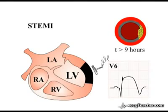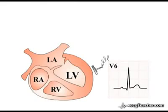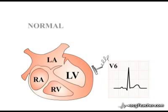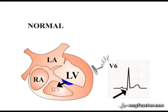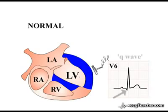The ECG leads looking directly at the infarcted area may develop an abnormality termed pathological Q waves. A Q wave exists if the first deflection of the QRS complex is negative. In a normal person, the left-to-right movement of current during depolarization of the interventricular septum can produce an initial negative deflection in the left lateral leads, but this is rapidly overwhelmed by current spreading through the left ventricle — this is a physiological Q wave, limited in magnitude and duration.